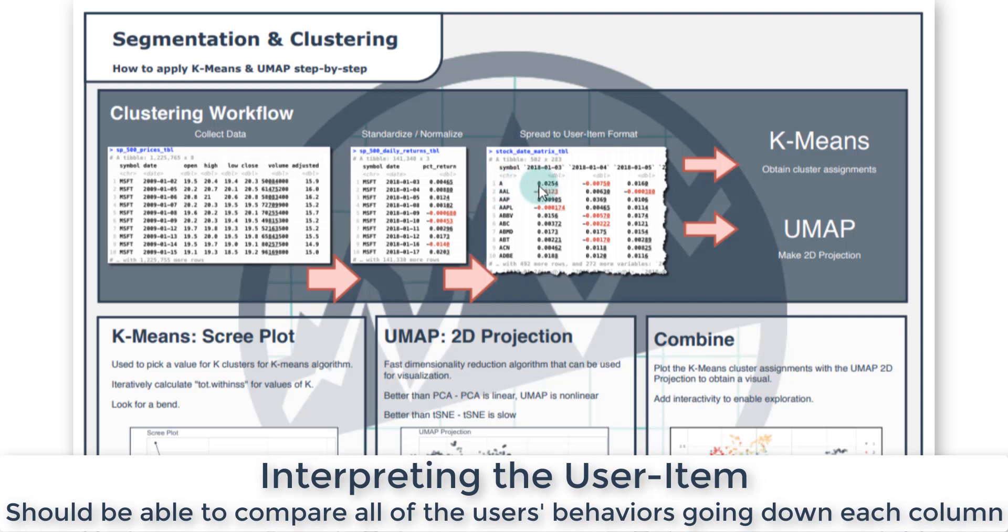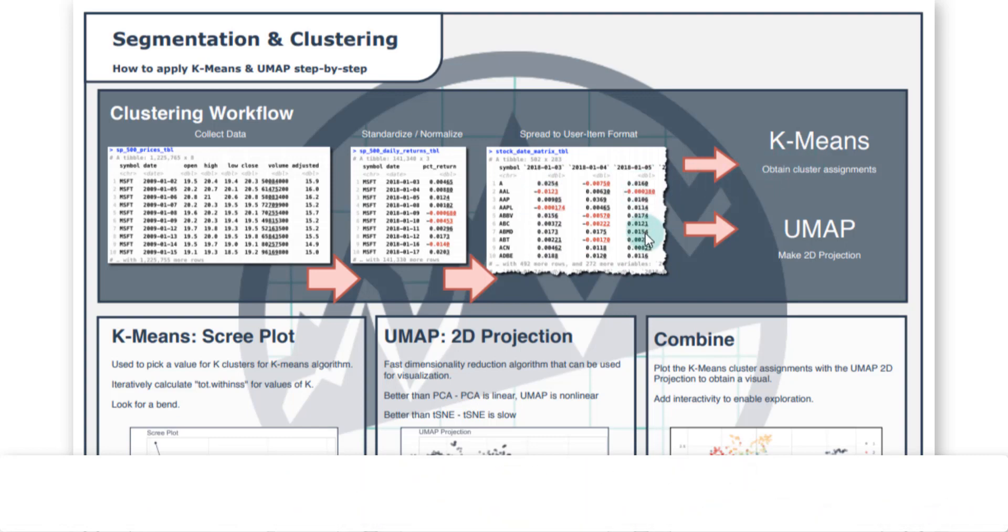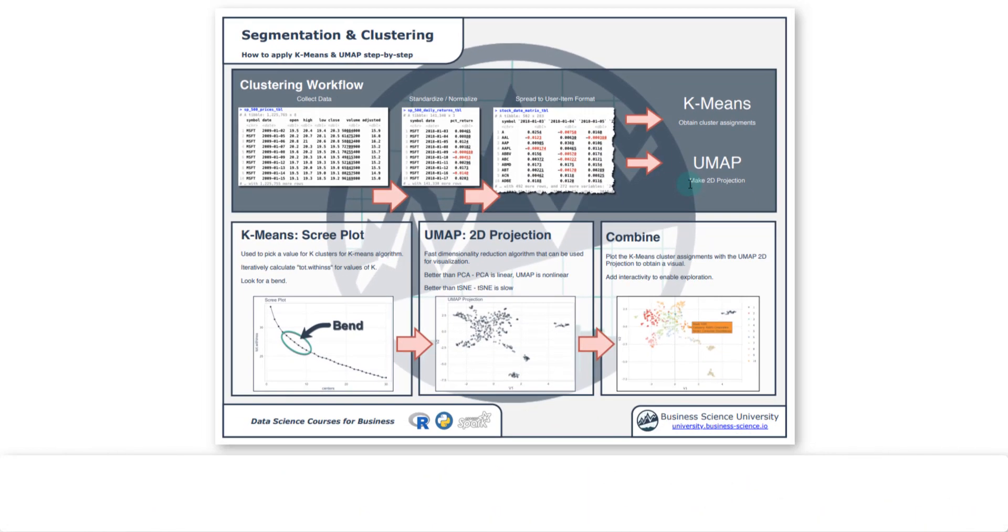What's nice is you're able to compare them. For this particular day, this is Agilent Technologies - they had a percentage return of 0.254 from the previous day, so their stock went up two and a half percent. This one, AAL, went down 1.2%, so you're able to compare these two stocks together. That's what gives you this matrix that can then be plugged into k-means and can be plugged into UMAP. Once you get through this data preparation process, then you're working with k-means.